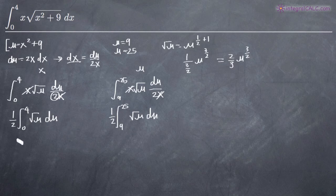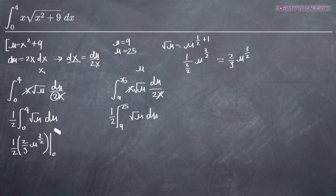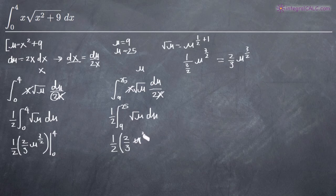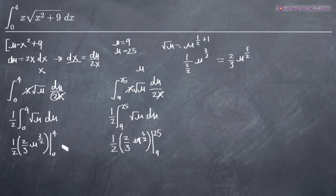So that's our integral. We can go ahead and write that in: 2 thirds times u to the 3 halves, evaluated on the range 0 to 4. And over here, we'll get 1 half times 2 thirds times u to the 3 halves, evaluated on the range 9 to 25.